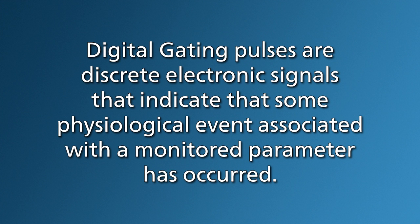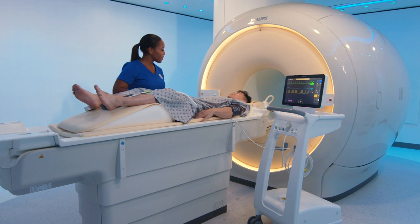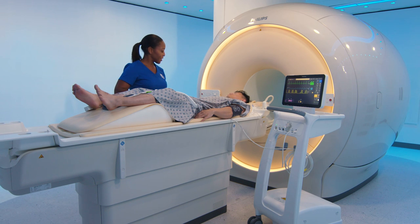Digital gating pulses are discrete electronic signals that indicate that some physiological event associated with the monitor parameter has occurred. Your MRI system will determine which type of data output your scanner system receives.